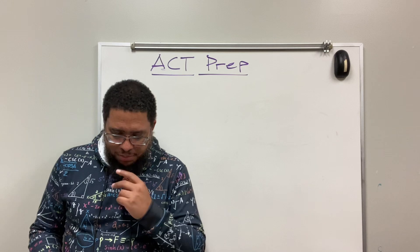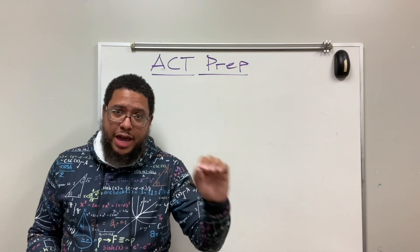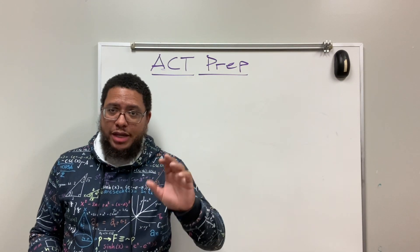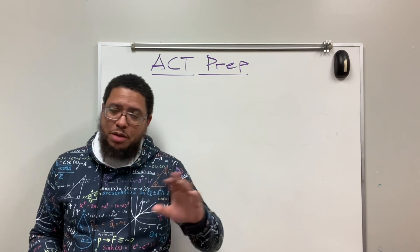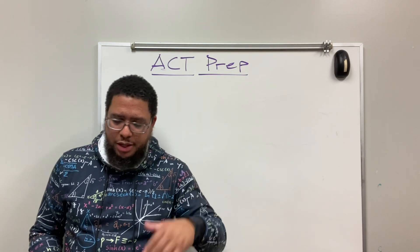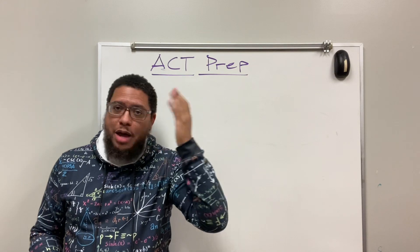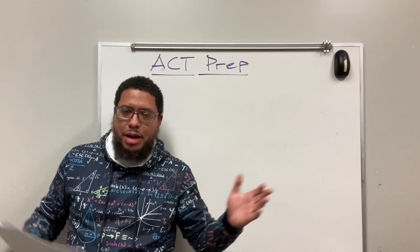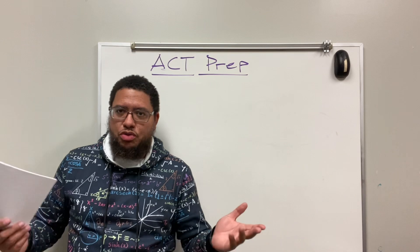Alright, so here goes. If the total cost of X apples, X is a variable, X apples, meaning we don't know how many apples it is. It could be any random number of apples, right? It could be like, I don't know, 10,000 apples, like how the math textbook word problems be, right? Somebody buying 10,000 apples from the grocery store.